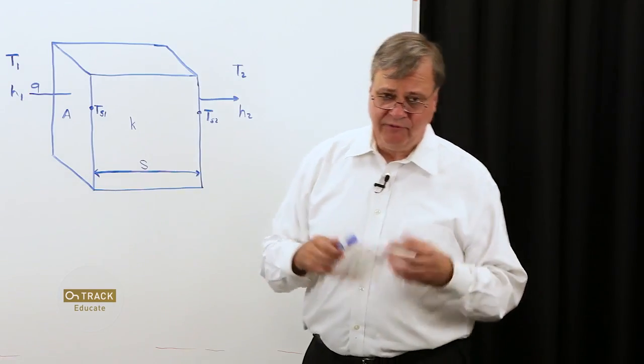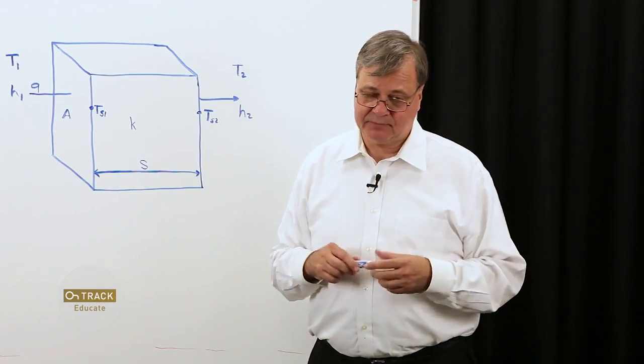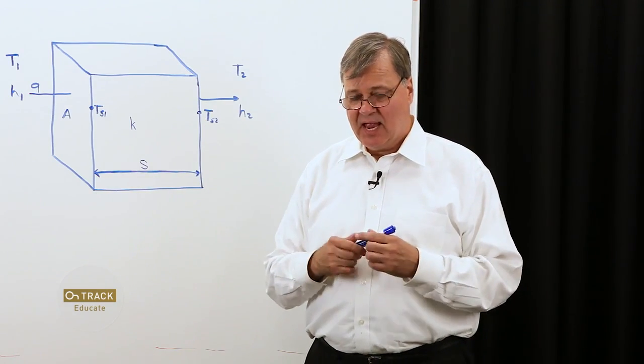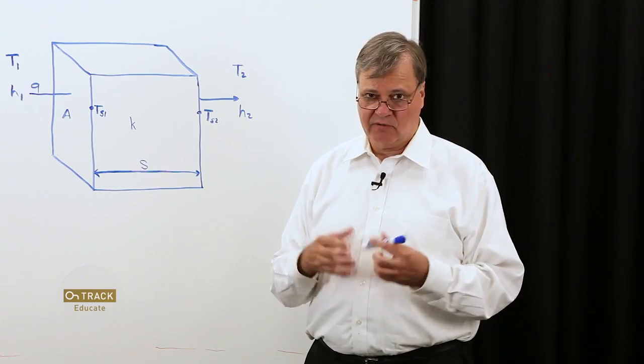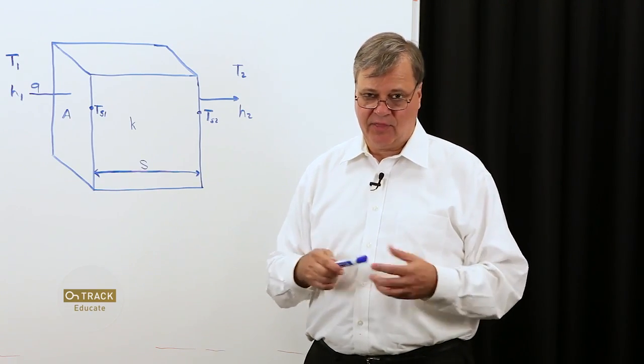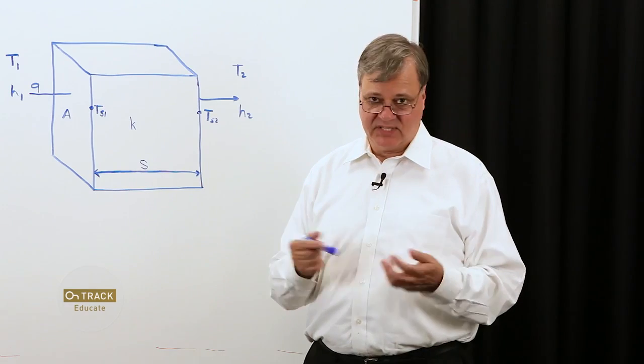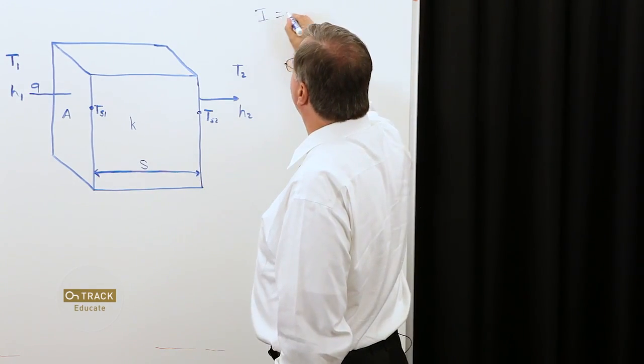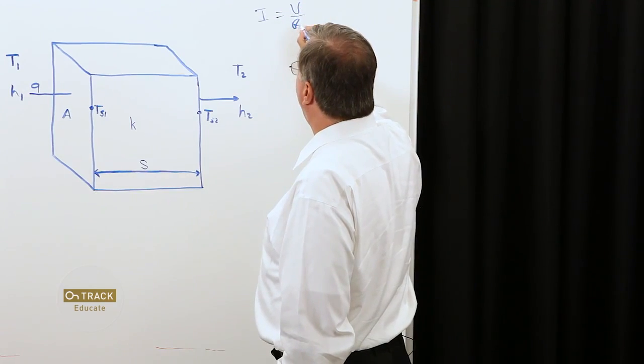Now, we're all familiar with Ohm's law: I equals V over R. What that represents is a forcing function, voltage, forcing current to go through an electrical resistance. Looks like I equals V over R electrical.